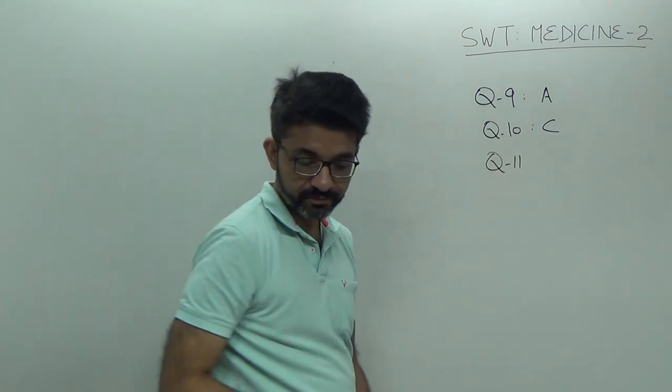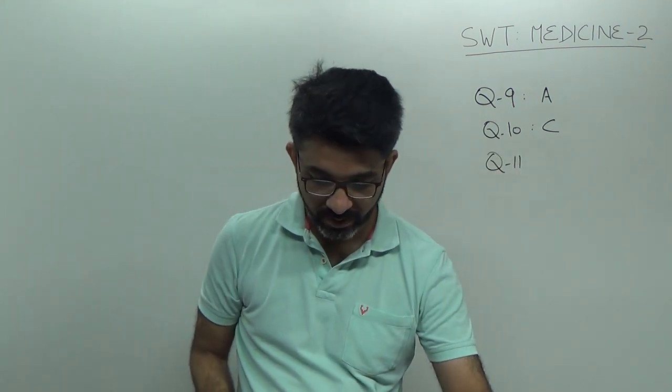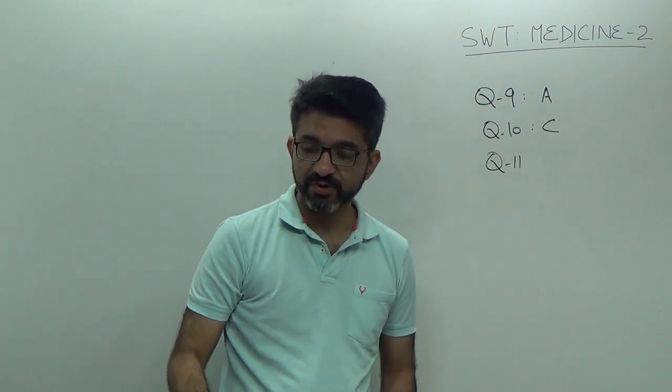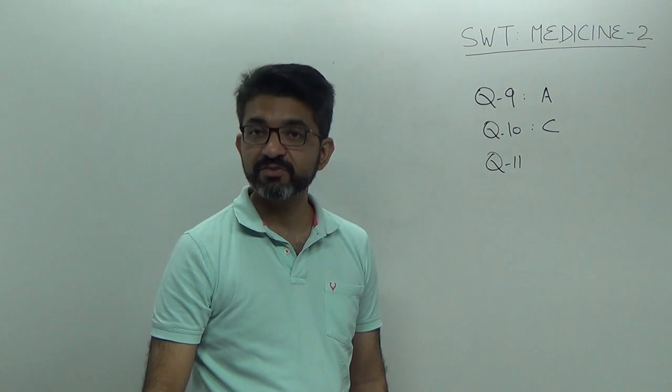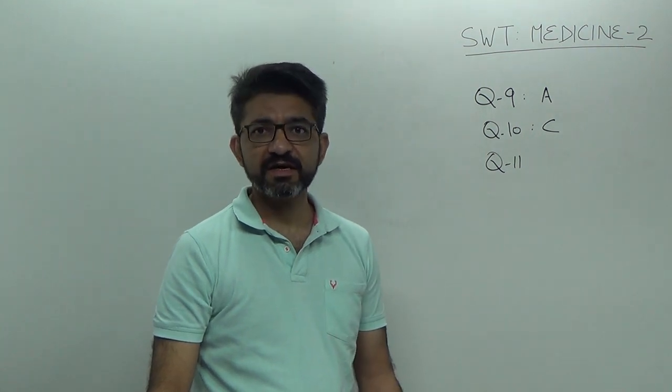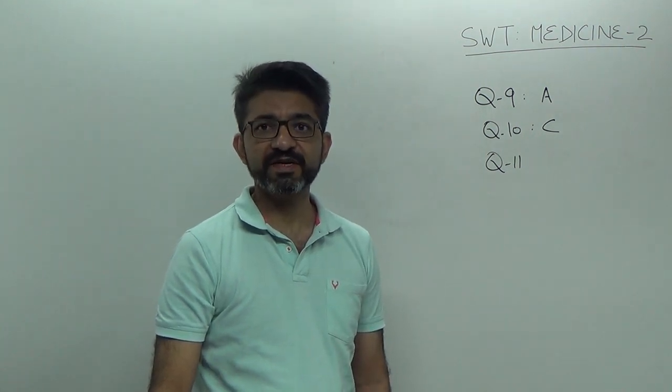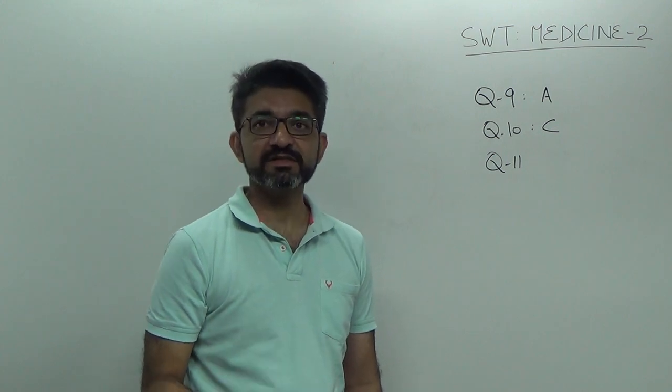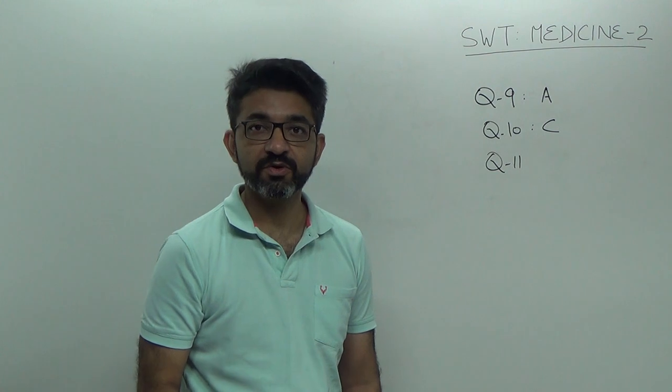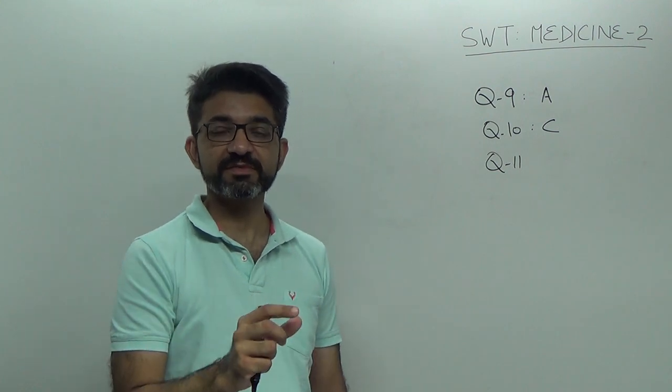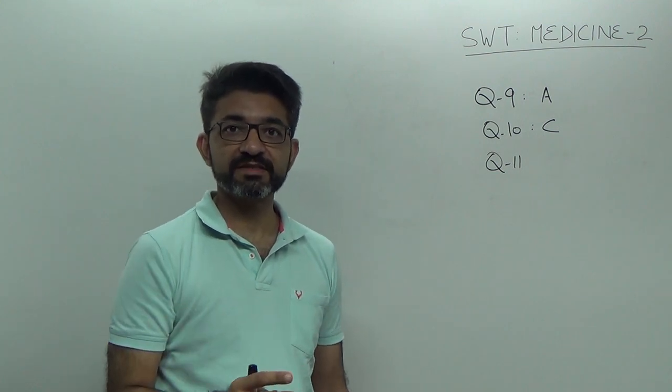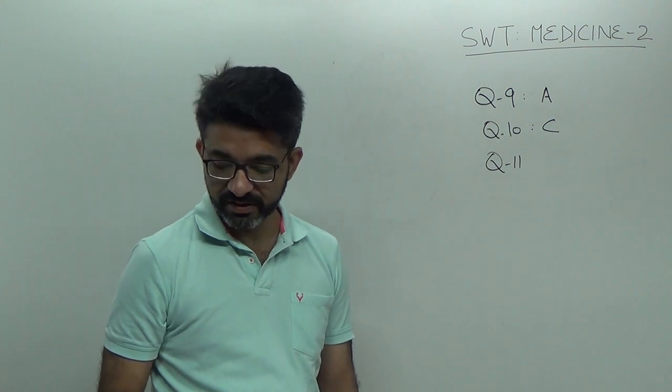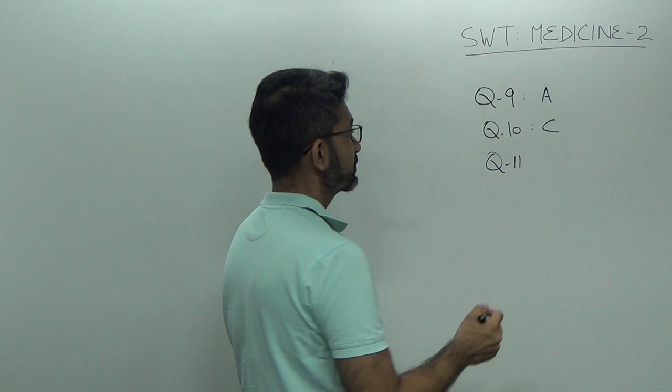Question number 11, weight loss may be seen in all of the following. You know, uremia, adrenal insufficiency, pheochromocytoma. They have weight loss as one of the most important features. Insulinoma. Insulin is a weight promoting hormone. Remember insulin means weight promoting. It is a lipogenic hormone. So, insulinoma is not associated with weight loss. Answer is D.